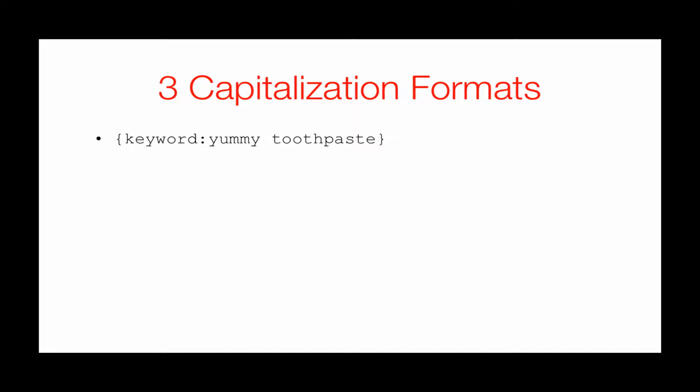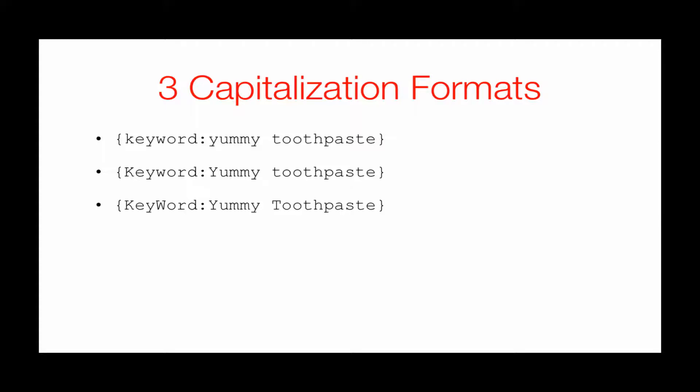There are three capitalization formats. The first uses lowercase 'keyword' — no capitalization. The second uses uppercase K, lowercase w, which capitalizes the first letter of the first word only. The third uses capital K and capital W, which capitalizes the first letter of every single word, regardless of how they type it.